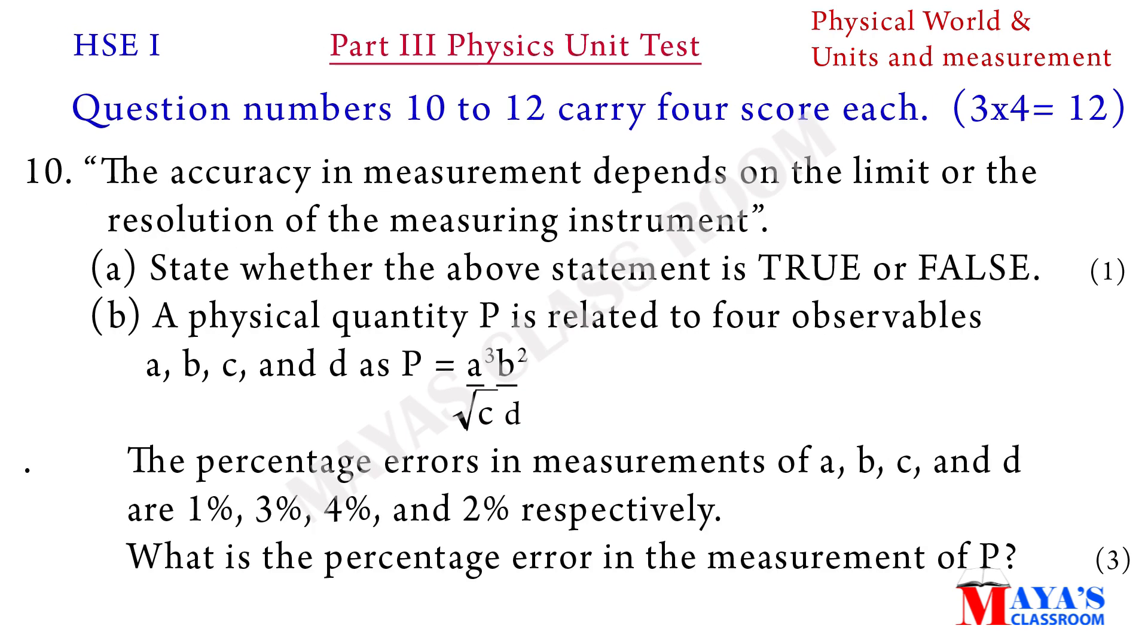Question number ten to twelve carry four score each. Tenth question: the accuracy in measurement depends on the limit or the resolution of the measuring instrument. A, state whether the above statement is true or false. B, a physical quantity P is related to four observables A, B, C, and D as P equals A cubed B squared divided by root of CD. The percentages error in measurements of A, B, C, and D are one percent, three percent, four percent, and two percent respectively. What is the percentage error in the measurement of P?